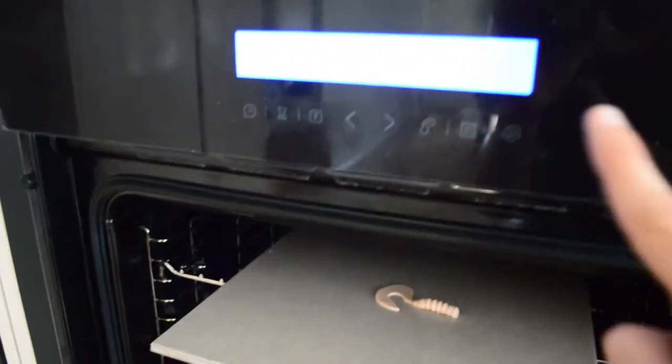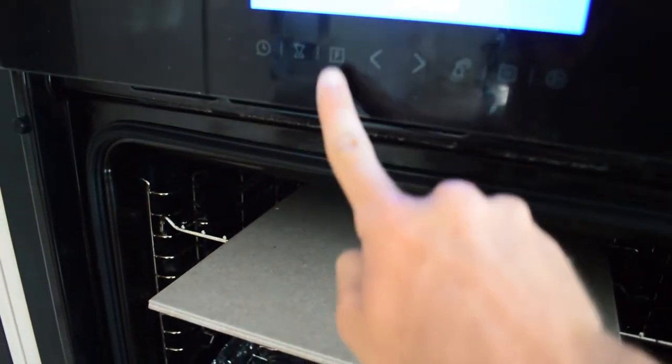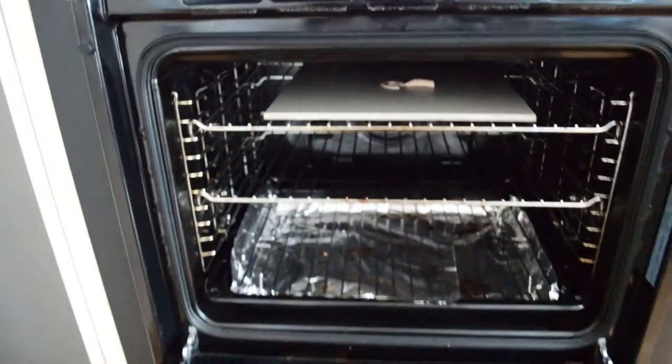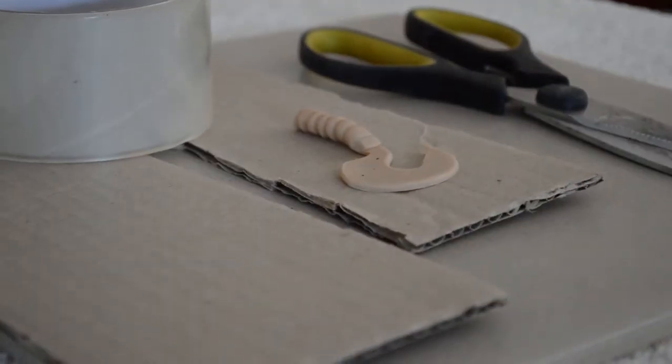Once you are happy with your design you can then add it to the oven. Put it in the oven at 120 degrees Celsius for about 10 to 15 minutes. Once the clay has set in the oven remove it and let it cool down.